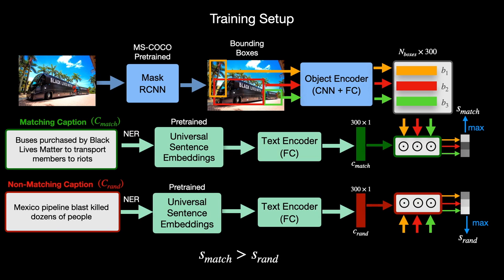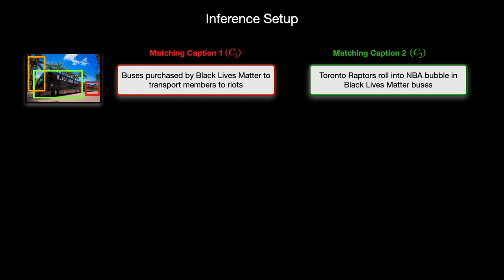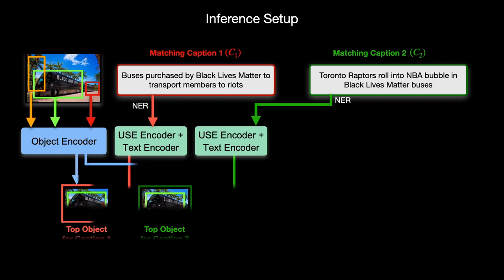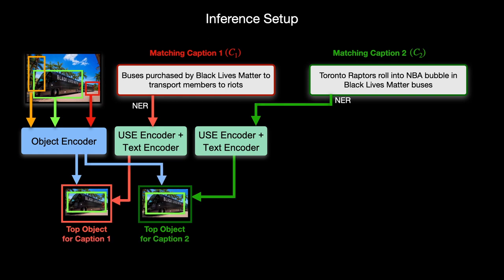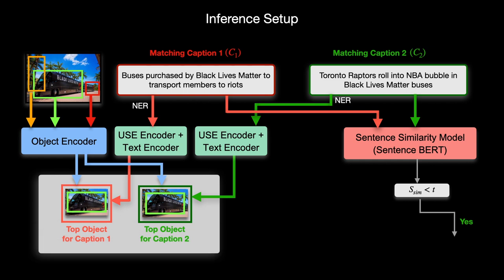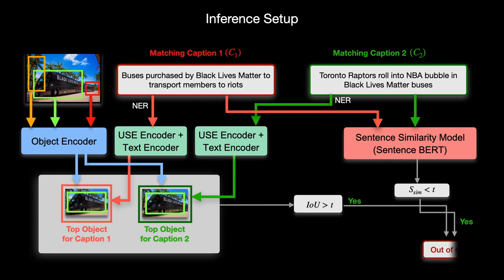Note that training does not require any out-of-context annotations. At test time, we feed object regions and both captions into our trained model. The high object-caption scores then tell us the relevant objects for each caption. We then use a pre-trained sentence BERT model to compute semantic similarity between the two captions. If the two captions are semantically different but match with the same object in the image, then the image with respect to captions is classified as out-of-context.